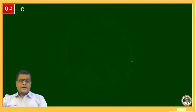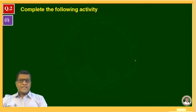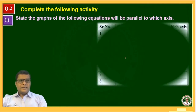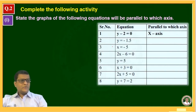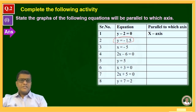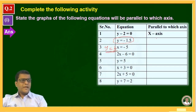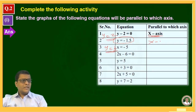The second question of this exercise is: complete the following activity. The first activity asks us to state which axis the graphs of the following equations will be parallel to. The equation of a line parallel to the x-axis is of the form y = b. So y = -1.5 is parallel to the x-axis. One solved example shows that simplifying gives y = 2, which is also parallel to the x-axis. Similarly, y = 5 is parallel to the x-axis.